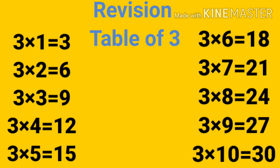Let's start revising: 3 ones are 3, 3 twos are 6, 3 threes are 9, 3 fours are 12, 3 fives are 15, 3 sixes are 18, 3 sevens are 21, 3 eights are 24, 3 nines are 27, 3 tens are 30.